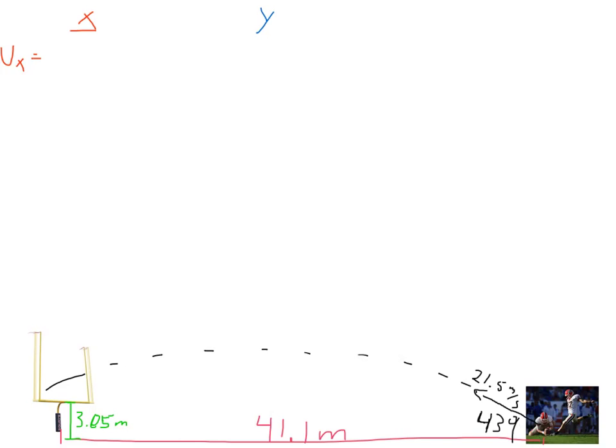So it's going to be 21.5 because that's the actual velocity, 21.5 cosine, because cosine for X, cosine 43, right?